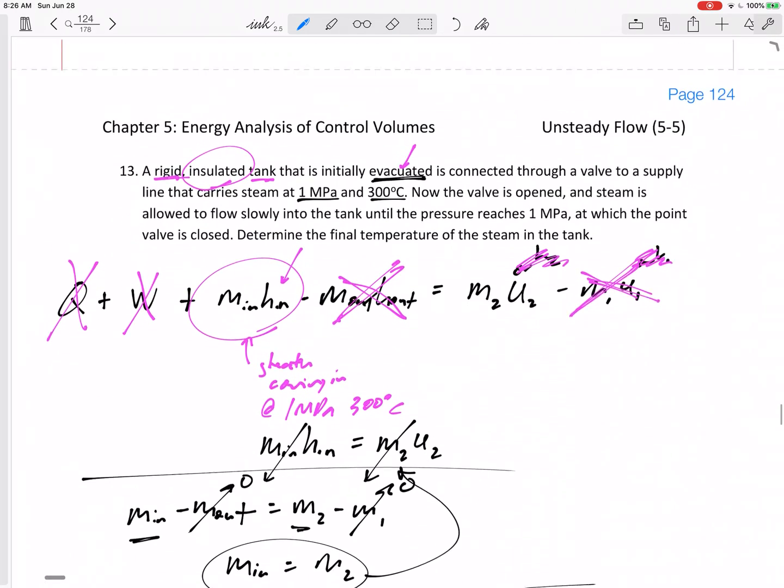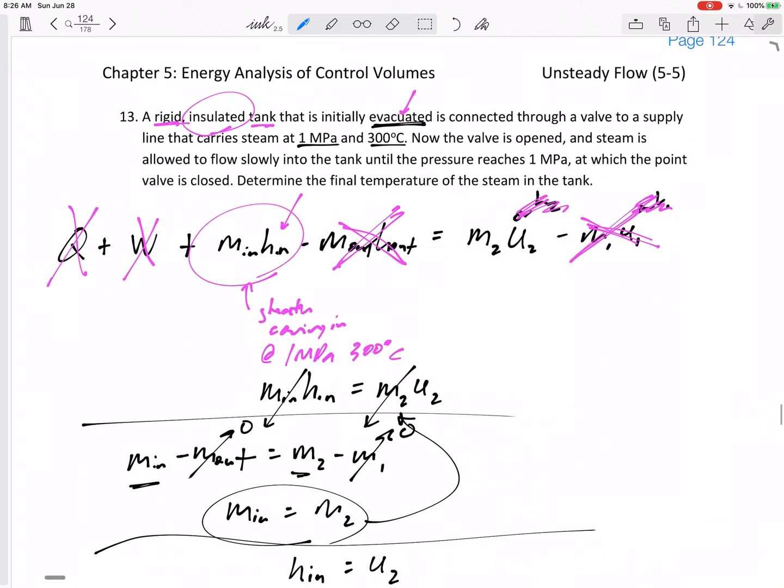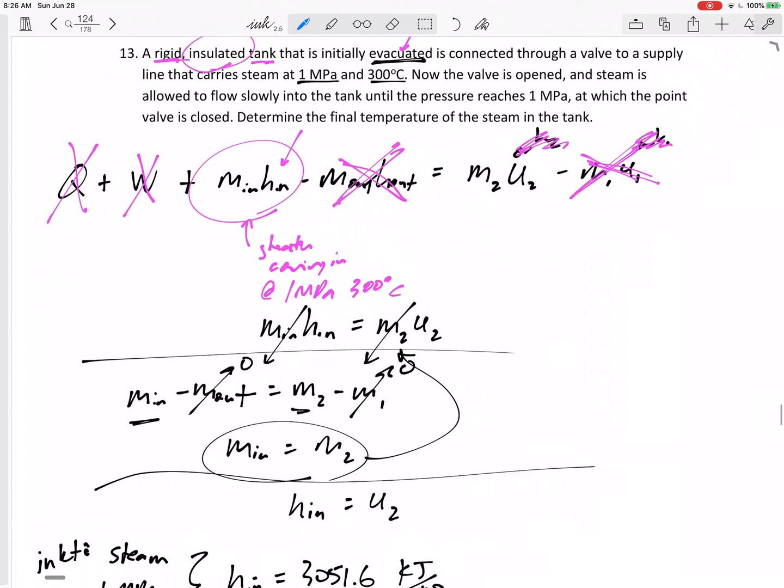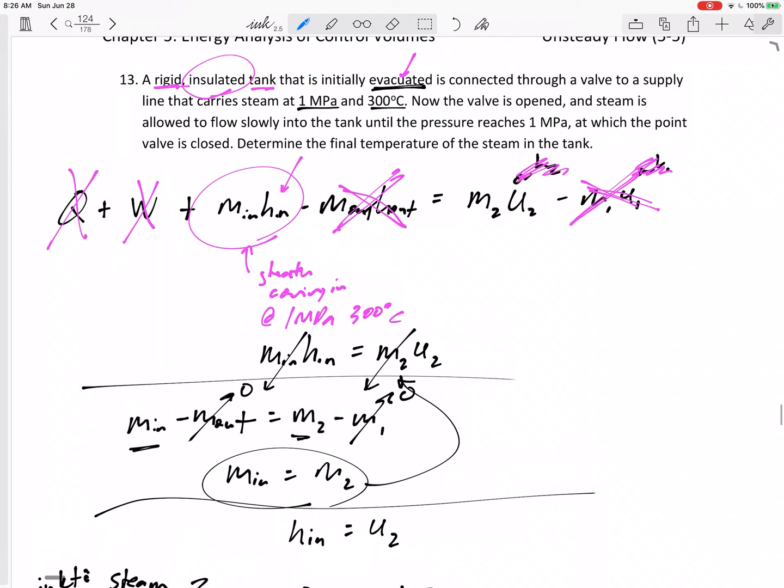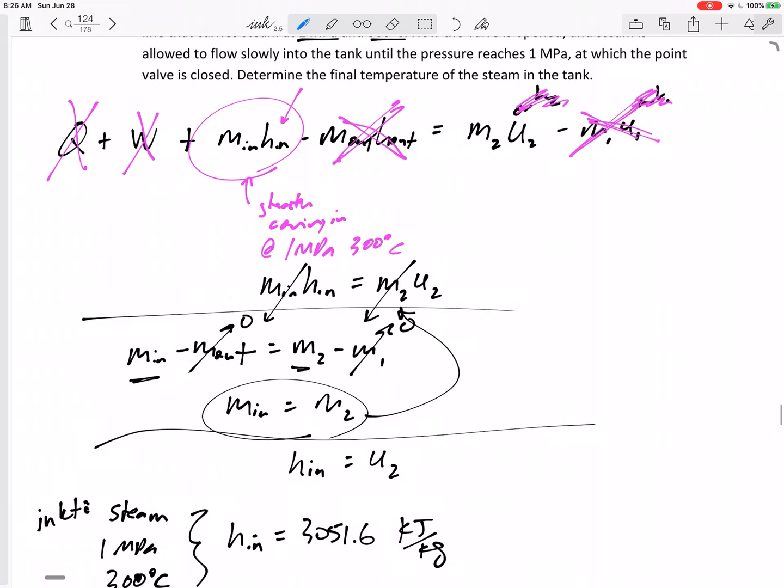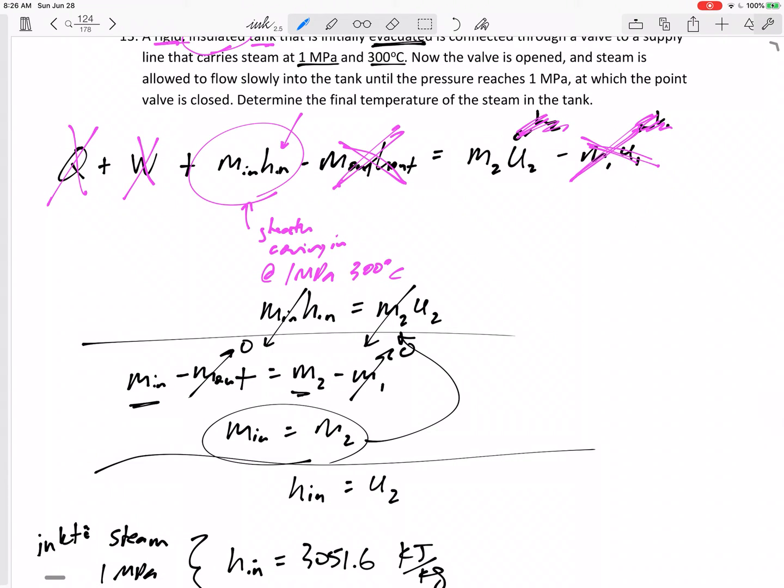Okay, so we noticed it was an unsteady flow process because it started with no mass and ended with a lot of mass, right? That's an unsteady flow process. So I wrote out that long equation, but if there's no heat transfer Q, that drops out. There's no work crossing boundary, that drops out. There was no outlet, that drops out. There was no initial conditions, so it really boiled down to a pretty easy equation.